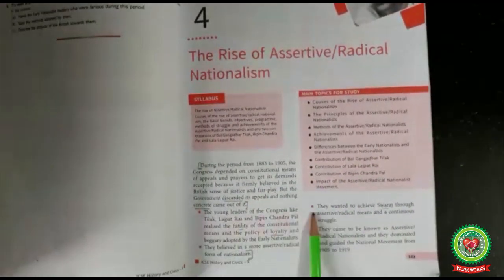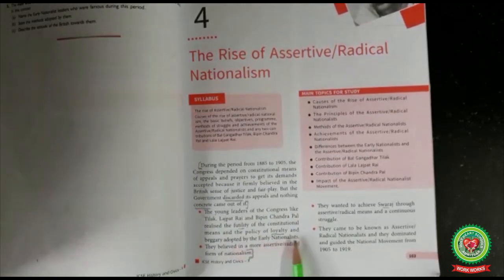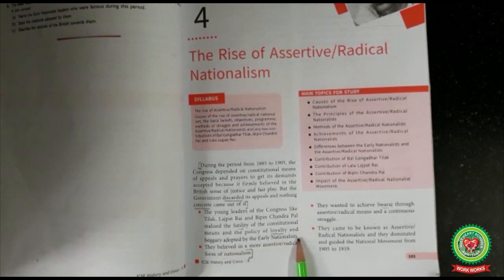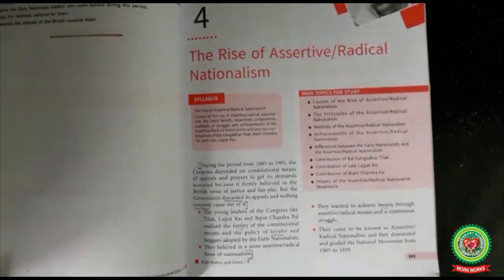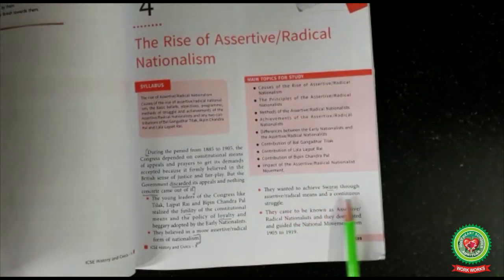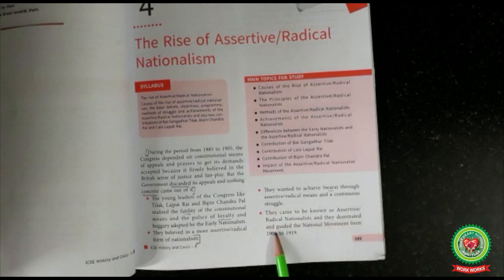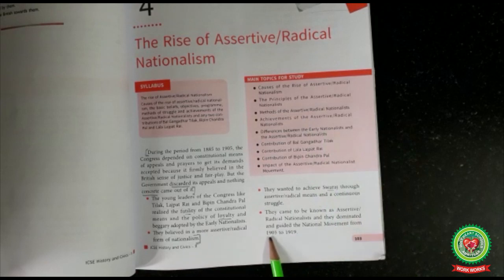The young leaders of the Congress — Tilak, Lala Lajpat Rai, and Bipin Chandra Pal — realized the futility of the constitutional means and the policy of loyalty and beggary adopted by the early nationalists, as whatever methods the early nationalists adopted did not produce any concrete solution. They believed in the assertive radical form of nationalism — love for your own country. They wanted to achieve Swaraj, meaning self-rule, through assertive radical means and continuous struggle. They dominated and guided the national movement from 1905 to 1919.